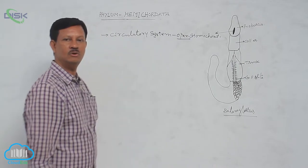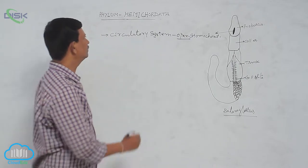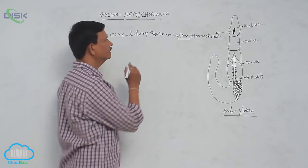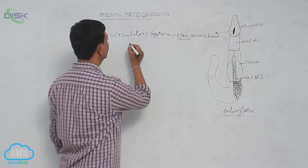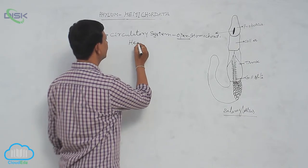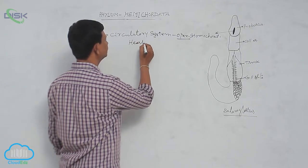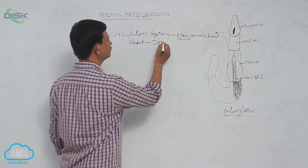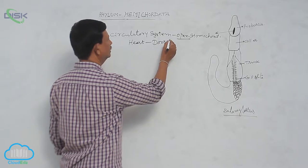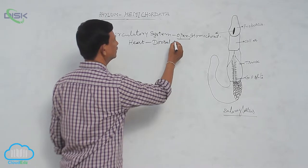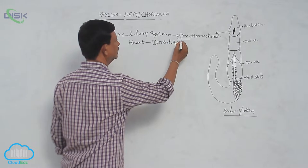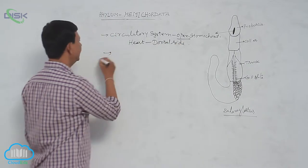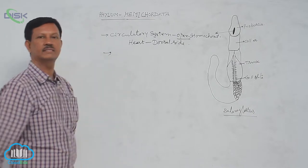This is also a difference between chordates and non-chordates. The heart is present on the dorsal side — it is situated at the dorsal side of the body.